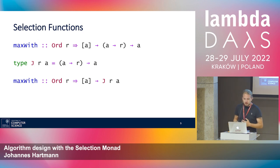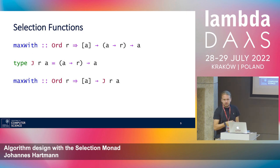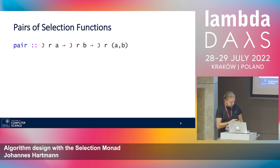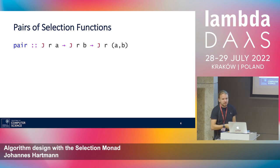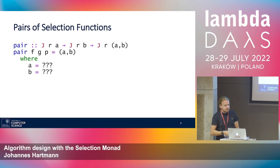How do we actually implement such a thing? Given two selection functions F of type JRA and G of type JRB, we need to produce a JR(A,B) pair. Recalling that the type is actually a function type, we can already have a judgment P that judges AB pairs into R. What we need to return in the end is an AB pair, so the question is how do we get there.